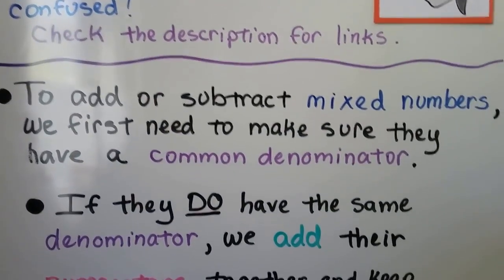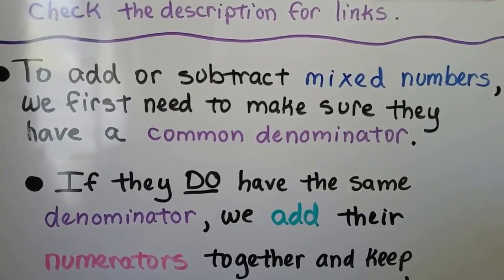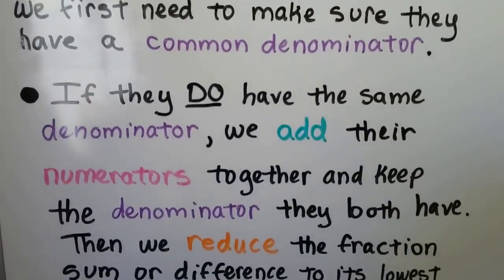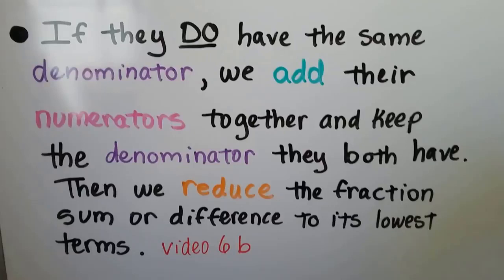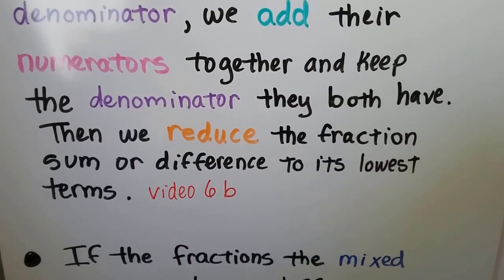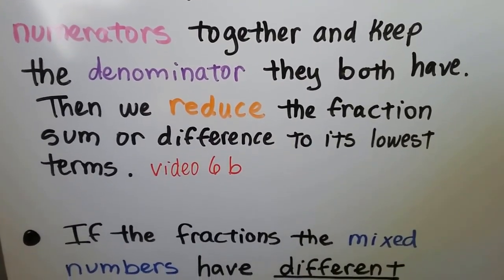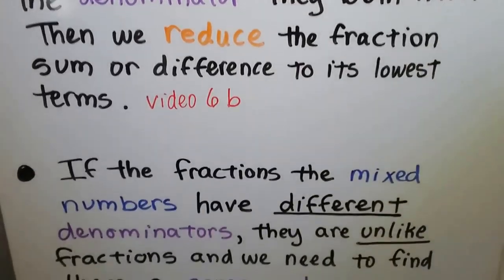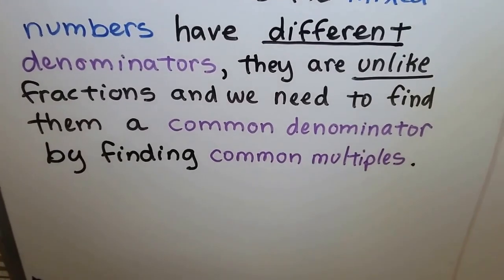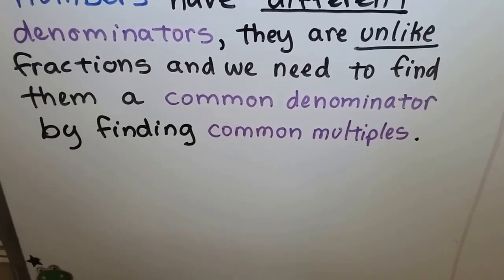To add or subtract mixed numbers, we first need to make sure they have a common denominator. It's the same thing as adding fractions — we just now have a whole number to deal with. If they do have the same denominator, we add their numerators together and keep the denominator they both have. Then we reduce the fraction sum or difference to its lowest terms, as we did in video 6b.